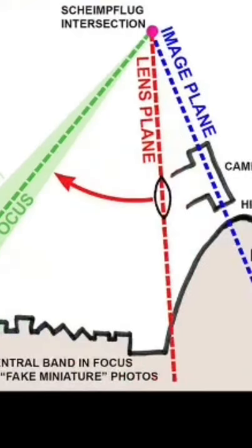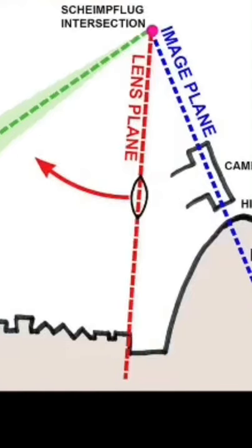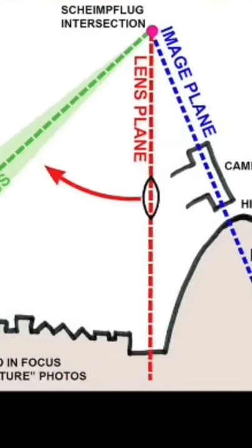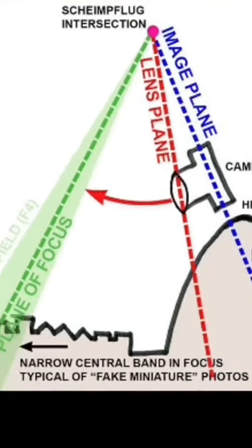The image plane and the lens plane also pass through the Scheimflug intersection. As you tilt upwards, the slim band of focus passes through the scene like a wave.